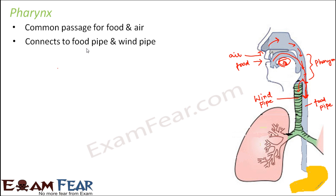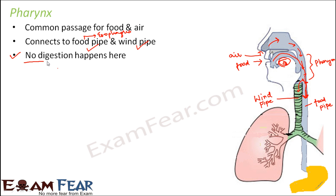The pharynx connects to both the food pipe and the wind pipe. The food pipe is the esophagus. Importantly, no digestion happens in the pharynx — it is just a space that the food material must pass through to reach the esophagus, and from the esophagus it will reach the stomach. No breaking down of complex to simpler particles occurs in the pharynx.